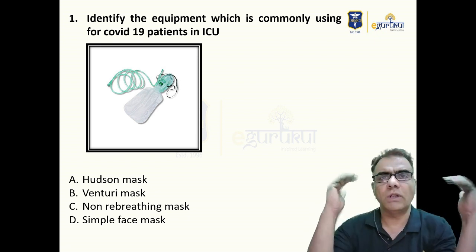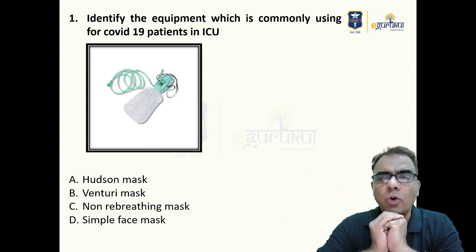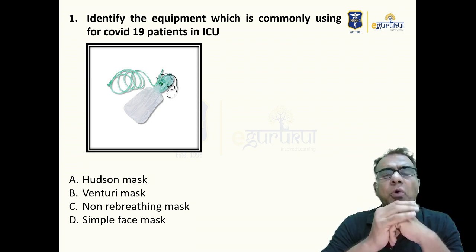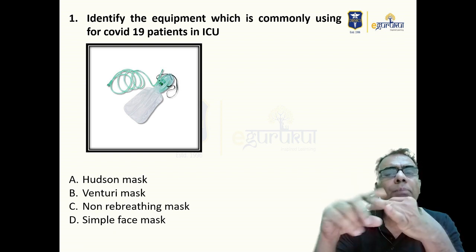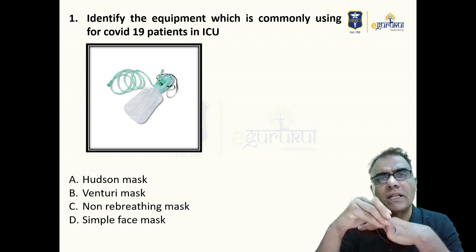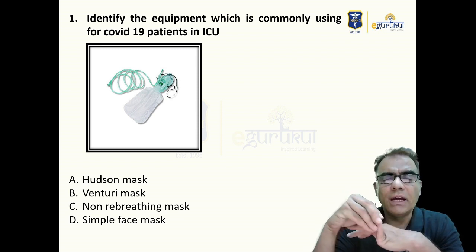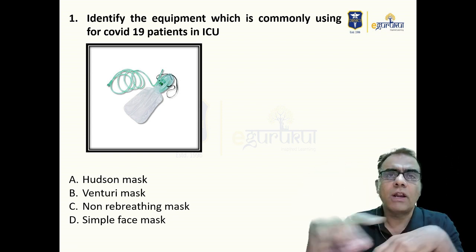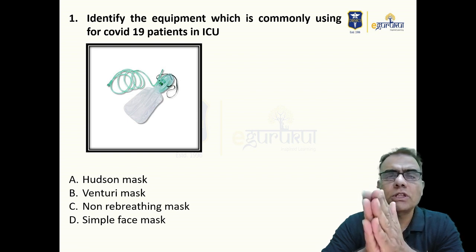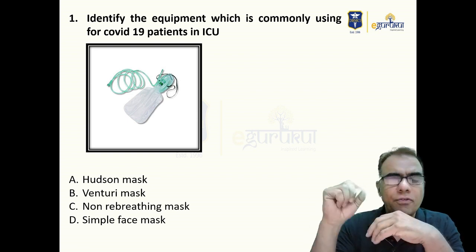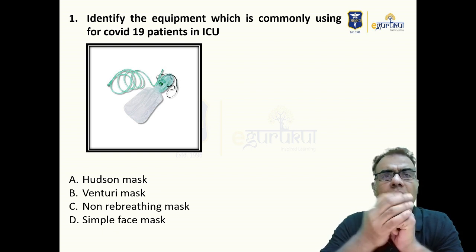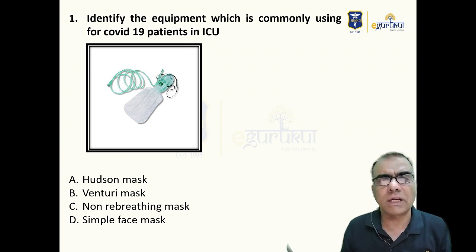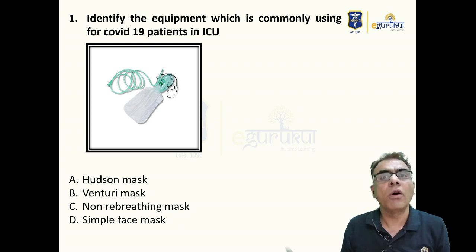Oxygen delivery devices are classified as high flow and low flow. High flow includes the Venturi mask — high flow delivers fixed oxygen, they are accurate. Low flow includes your simple oxygen mask, also called Hudson mask or McCartney mask, nasal cannula, and oxygen mask with reservoir bag — these are all classified as low flow systems. Low flow systems are not accurate; their performance varies with changes in respiratory parameters like respiratory rate, tidal volume, or flow requirement.